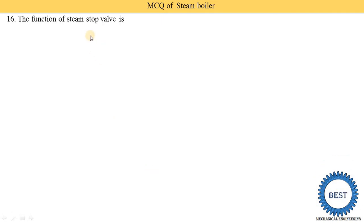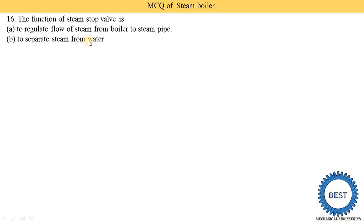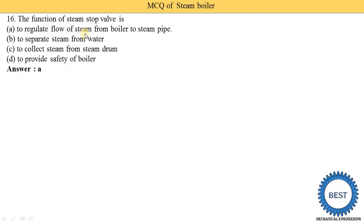The function of the steam stop valve is to regulate the flow of steam from the boiler to the steam pipe — option A is correct. The steam stop valve regulates flow, i.e., opens, closes, or sets the required quantity. To separate steam from water, a steam separator is required; for safety, safety valves and pressure gauges are used.